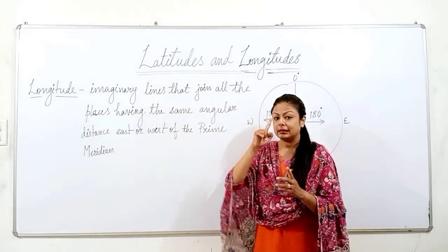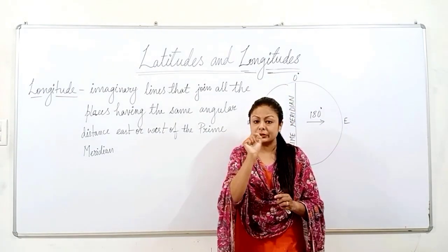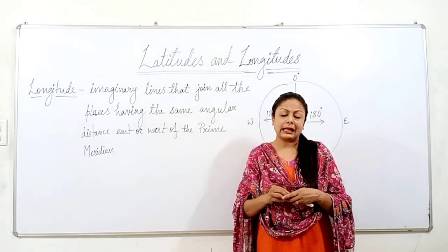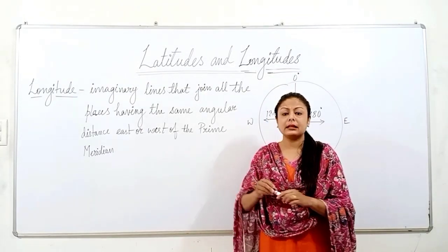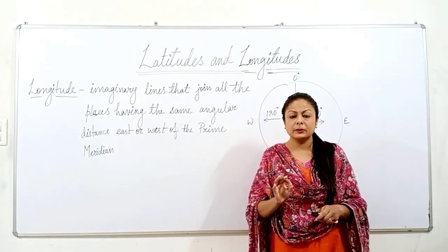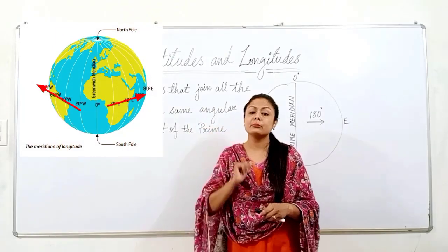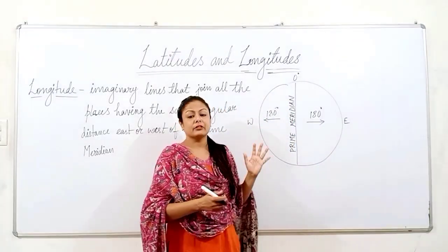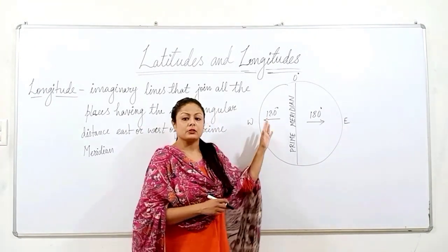As we measure in case of latitude — we take the center of the earth and from there we measure an angle and draw our latitude — similarly in case of longitude the same method is followed. But it is drawn either east or west of the prime meridian. So let's have a look at this diagram. With the help of this I will explain more about longitudes.